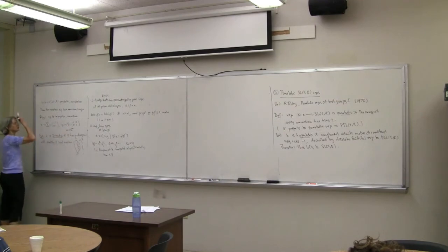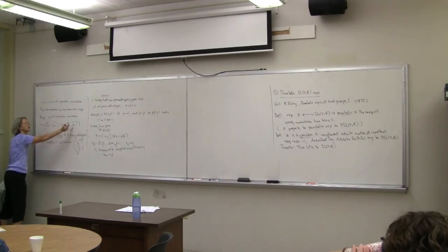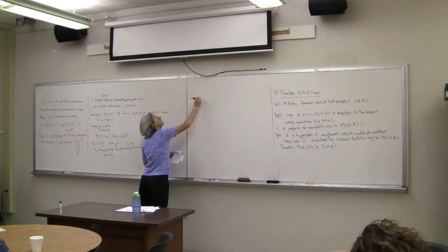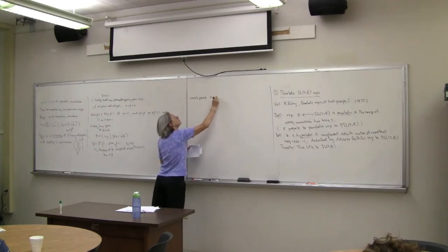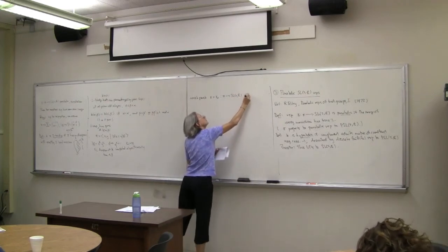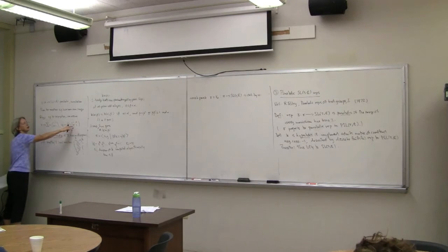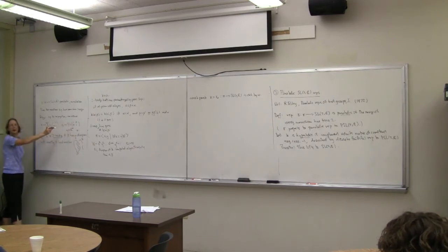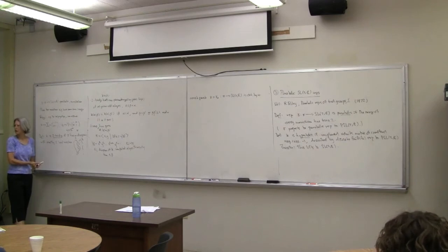Any non-abelian parabolic representation is determined up to conjugacy by the value ω. So every non-abelian parabolic representation Γ_ω into SL₂(ℂ) is determined by ω. What values of ω work? We replace ω by an indeterminate w, plug the images into the relation, and ask when the relation is satisfied.